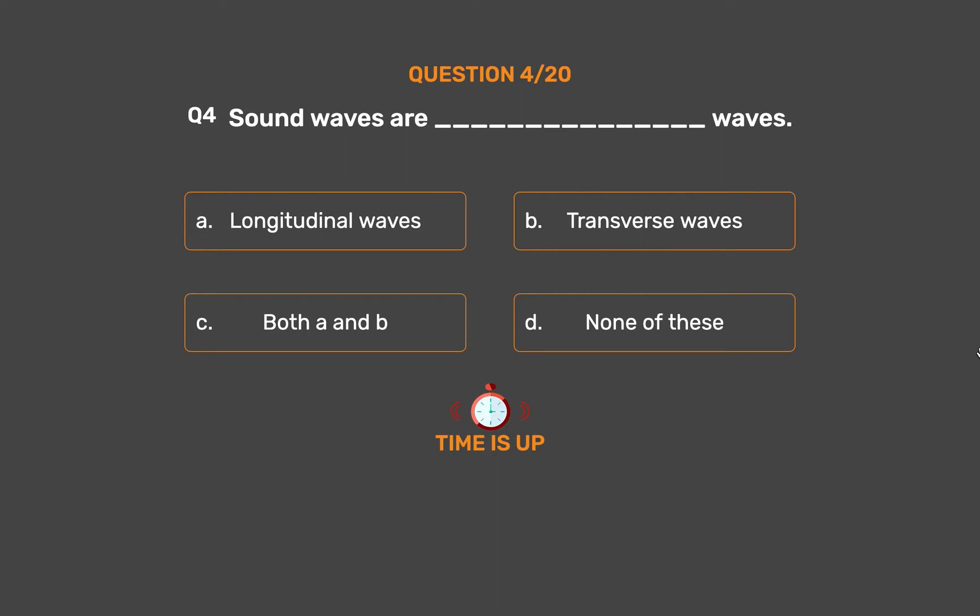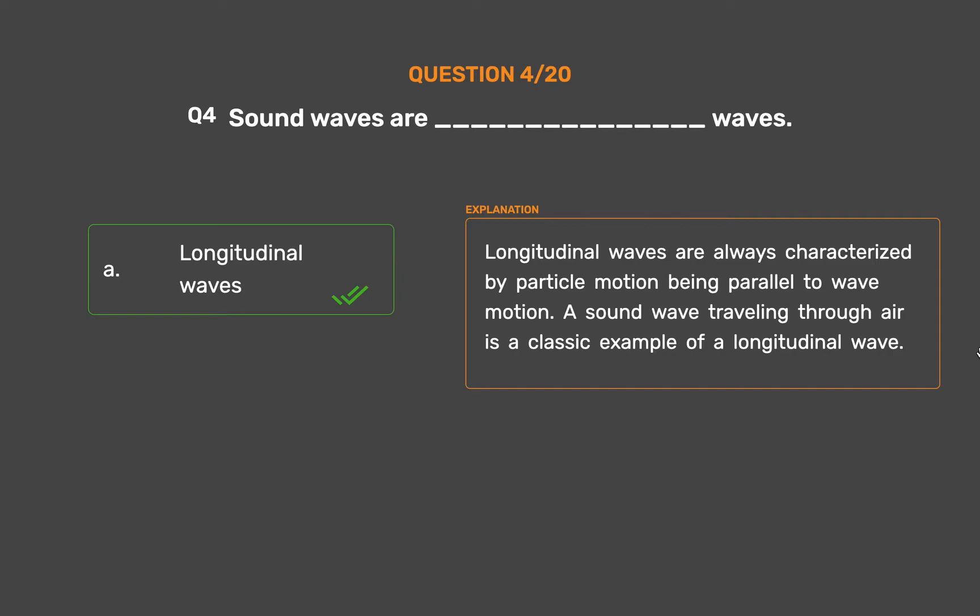The correct answer is Option A, Longitudinal waves. Longitudinal waves are always characterized by particle motion being parallel to wave motion. A sound wave traveling through air is a classic example of a longitudinal wave.